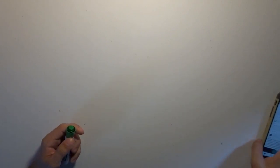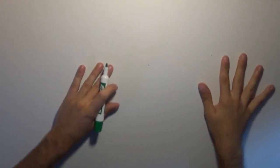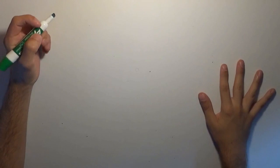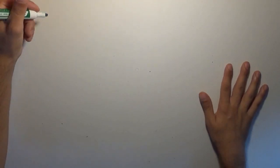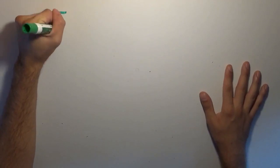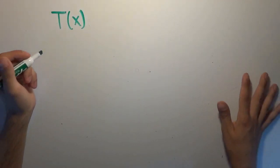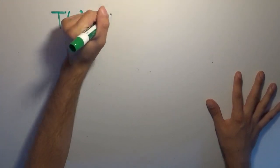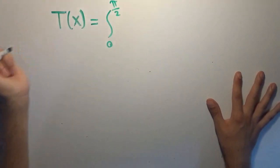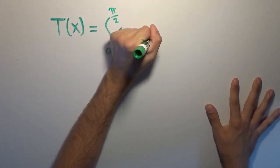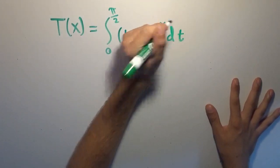Today, we're going to start assessing a certain integral, very similar to the last one involving the natural logarithm, except this time it involves the tangent function and powers of the tangent. We're going to define this function, capital T of x — as in tangent, just like we defined capital L for logarithm — as the integral from 0 to pi over 2 of tangent(t) to the power of x with respect to t.